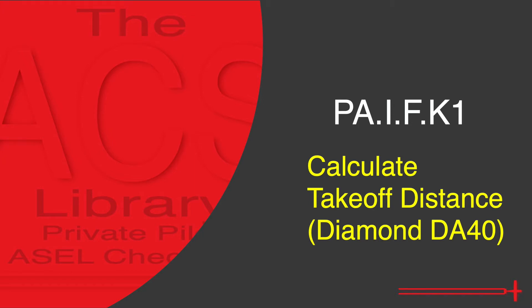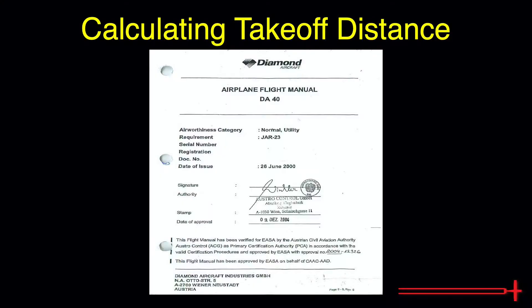Finding takeoff data for the Diamond DA40 follows virtually the same process as the Piper Archer, so if you've already seen that video, a lot of this will feel like review. Anytime we're talking performance calculations, we'll want to have our aircraft's POH handy. We'll be using this sample POH — please remember to use the POH specific to your aircraft's serial number.